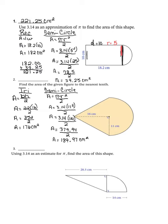To find the total area of the composite figure, I add the triangle area to the semicircle area: 189.97 plus 176. Adding these together gives 365.97 centimeters squared.